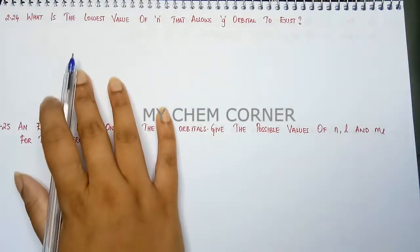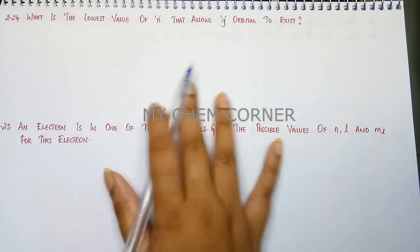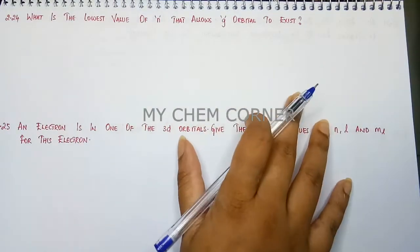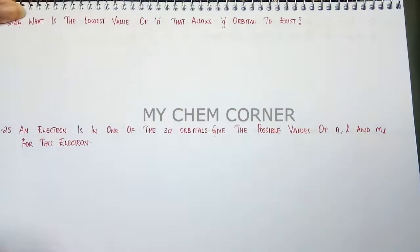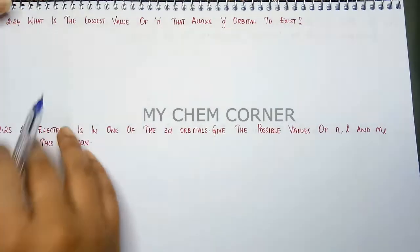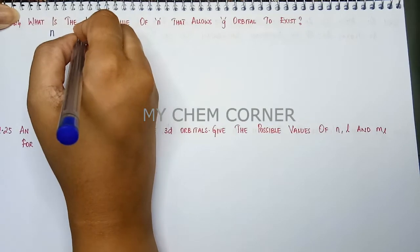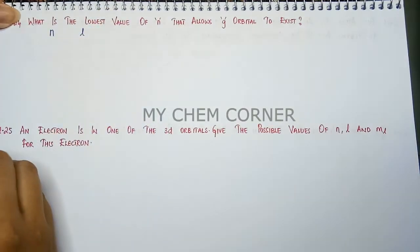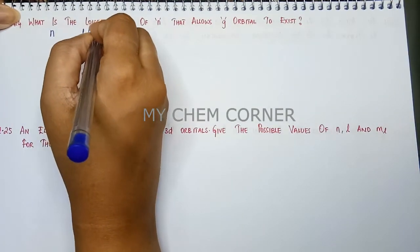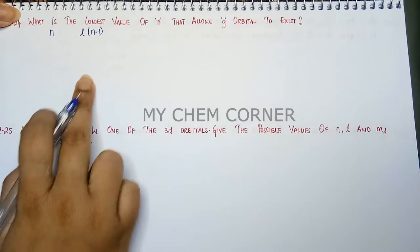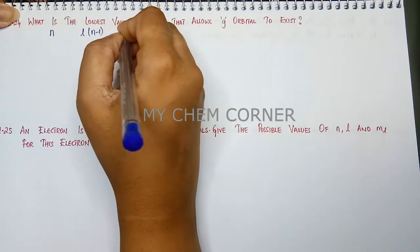All right, for this we have learned in detail in the chapter that when you have a principal quantum number n equal to so much, l value should be equal to this much. Same thing we are going to follow here also. n value and we are going to find out the l value. For l value the formula is going to be n minus 1, and when l equals a certain value we need to know what orbitals do we have.